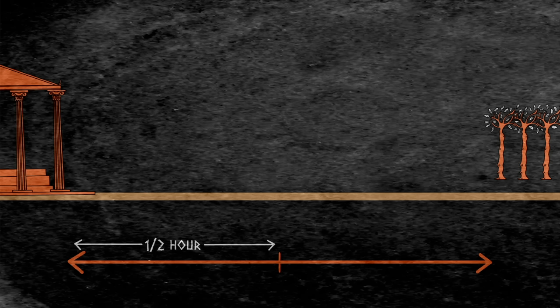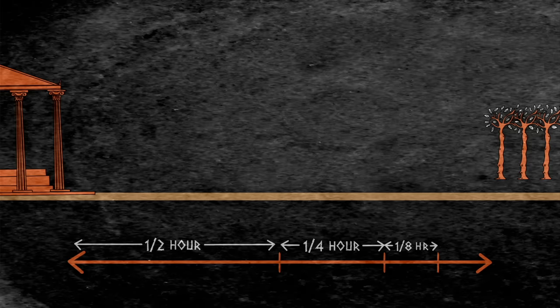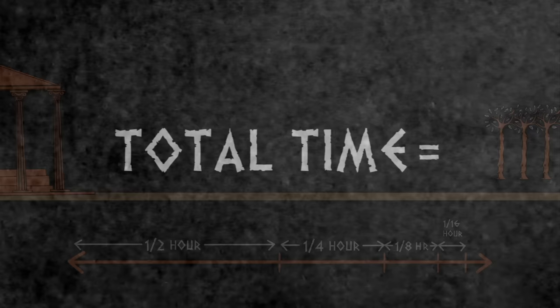But let's look at things from Zeno's point of view and divide up the journey into pieces. The first half of the journey takes half an hour. The next part takes quarter of an hour. The third part takes an eighth of an hour, and so on. Summing up all these times, we get a series that looks like this.